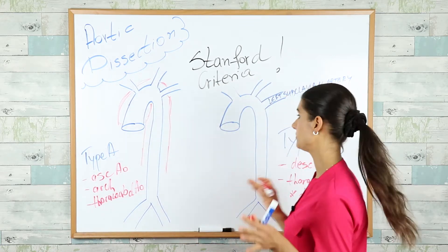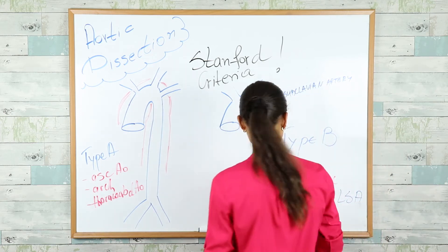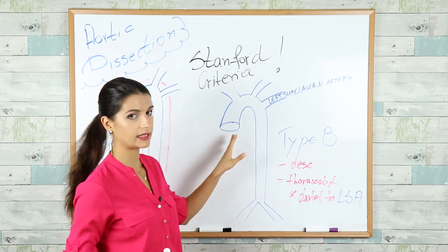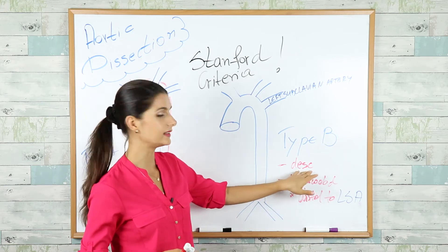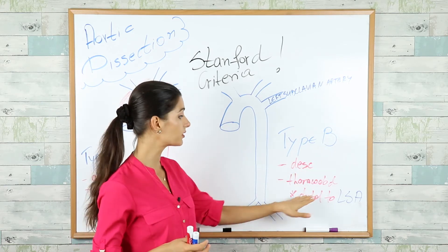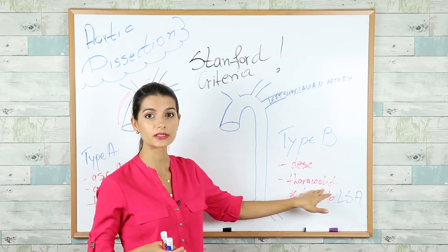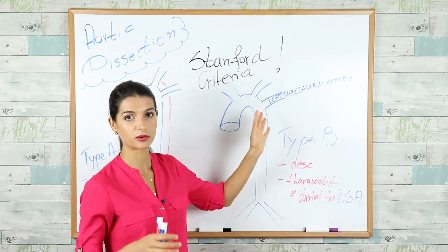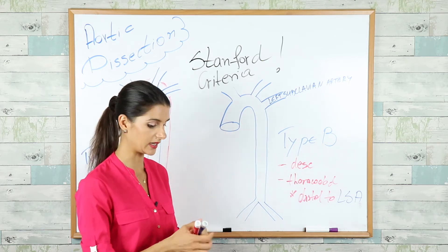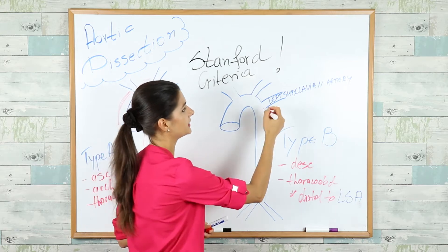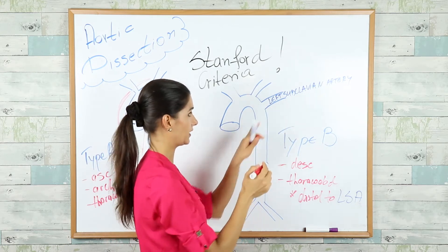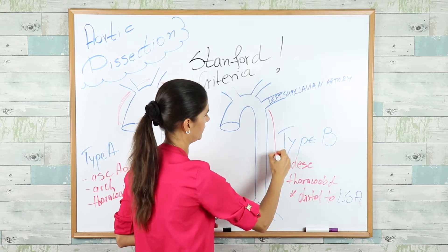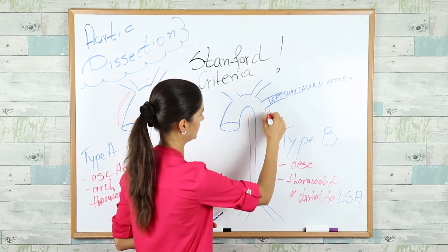In Type B, the aorta that is involved is the descending aorta or the thoracoabdominal aorta. Both types of aortic dissection are situated after the left subclavian artery — so after that branch.